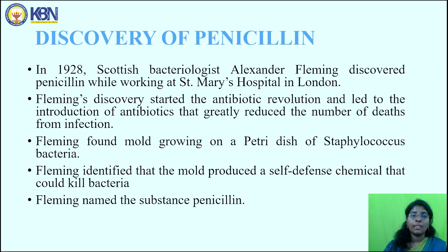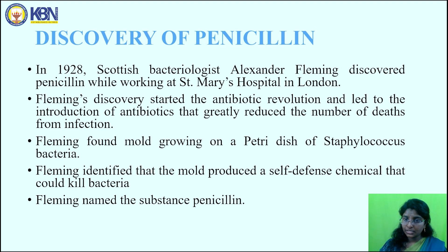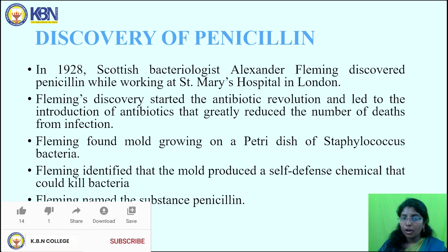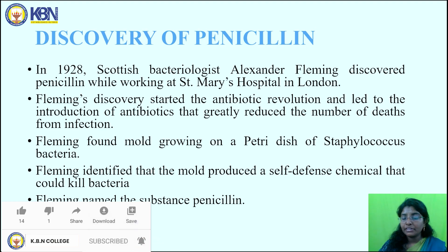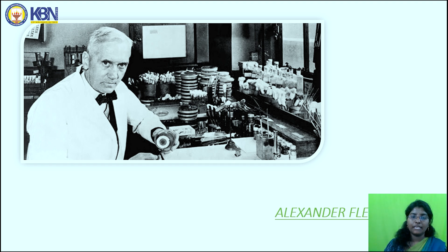Next, the discovery of penicillin. In 1928, Scottish bacteriologist Alexander Fleming discovered penicillin while working at St Mary's Hospital in London. Fleming's discovery started the antibiotic revolution and led to the introduction of antibiotics that greatly reduced the number of deaths from infection. Fleming found mold growing on a petri dish of Staphylococci bacteria and identified that the mold produced a self-defense chemical that would kill the bacteria. He named the substance penicillin. This is a picture of Alexander Fleming.